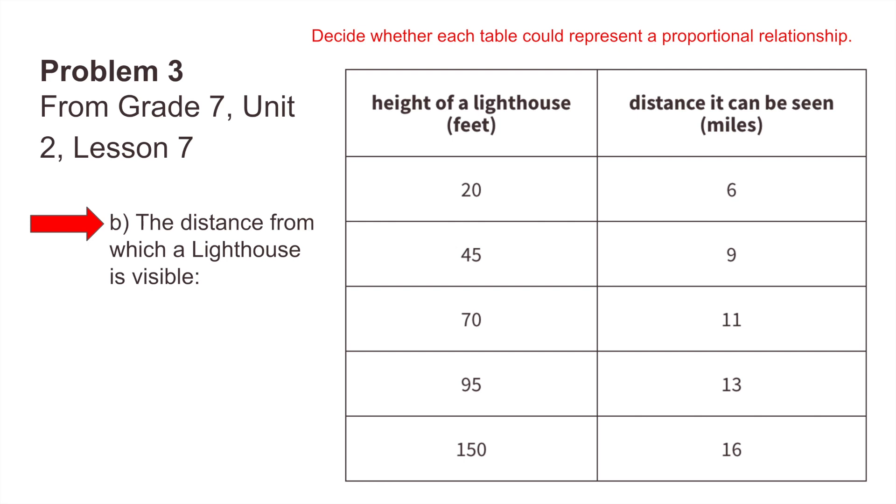Part B: the distance from which a lighthouse is visible. Remember, we need to decide whether this table could represent a proportional relationship. One way we can see if they're proportional is by dividing the height of the lighthouse by the distance it can be seen in miles.